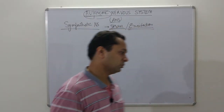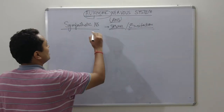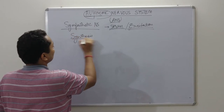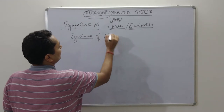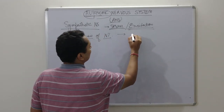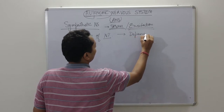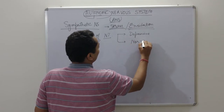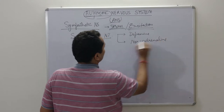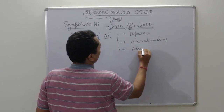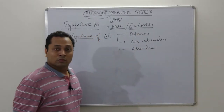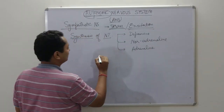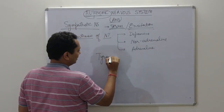First we have to understand the synthesis of the neurotransmitters. The neurotransmitters of the sympathetic nervous system are dopamine, noradrenaline, and ultimately adrenaline. The precursor molecule for the synthesis of these neurotransmitters is tyrosine.